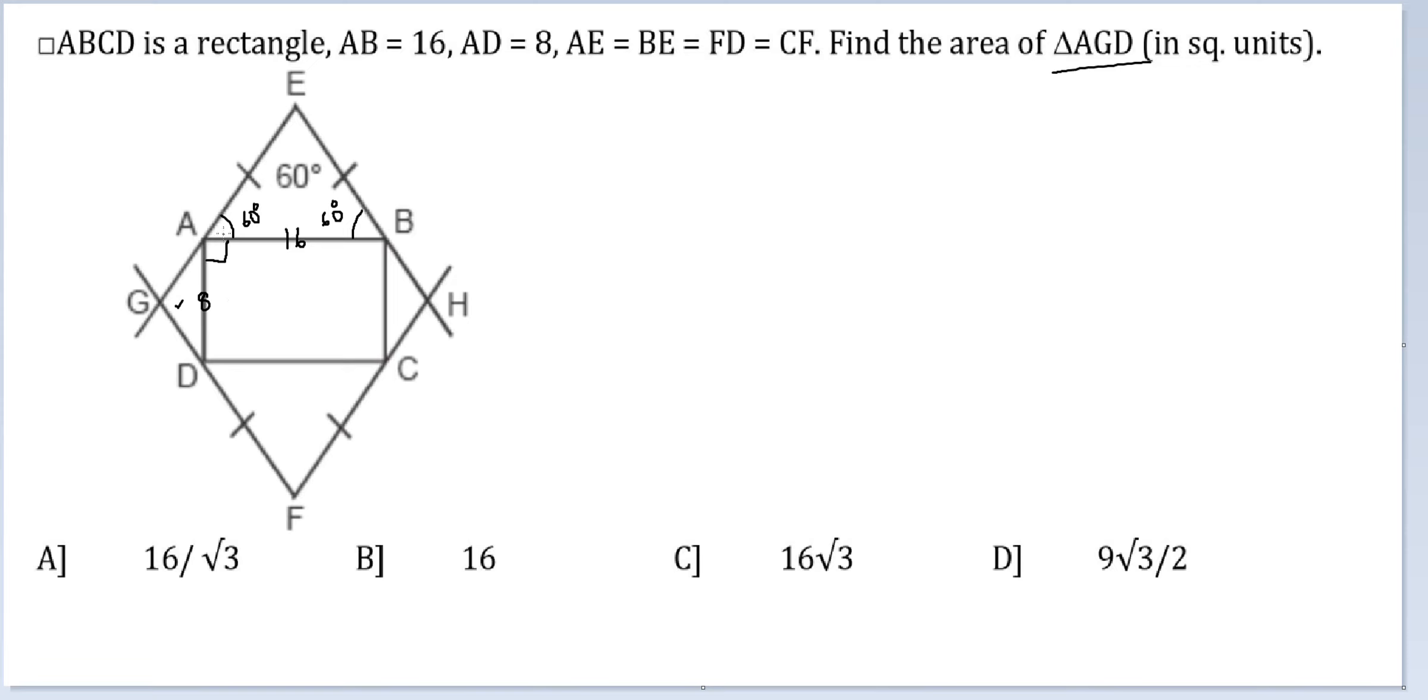Because this is a rectangle this will be 90. This is 60 and this is 90, so this will be 30 degrees. Similarly this will be 60, this will be 60 degrees, this will be 90 degrees, so this will be 30 degrees. So this will be 120 degrees.